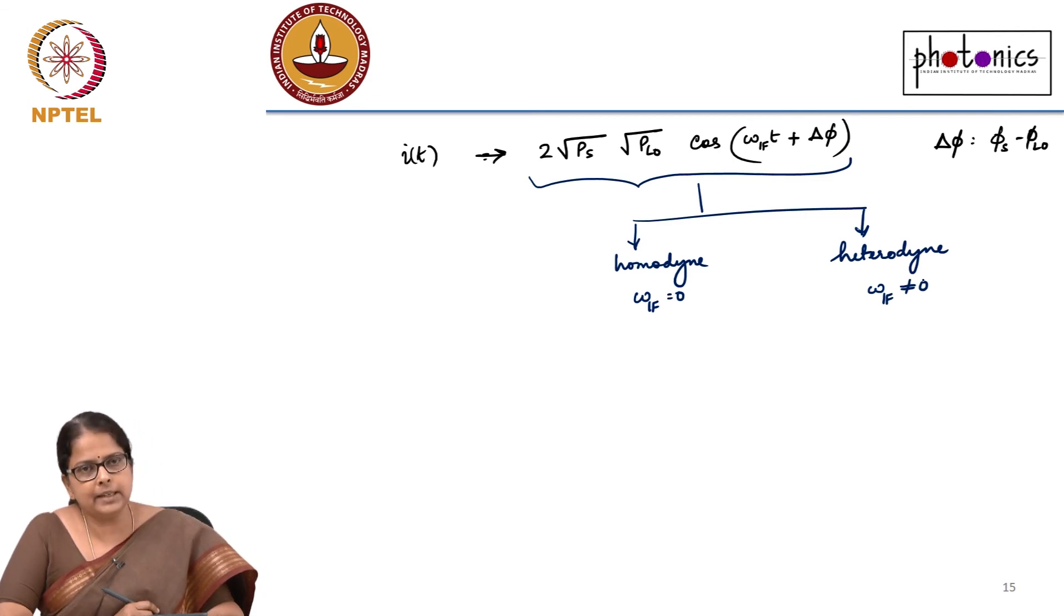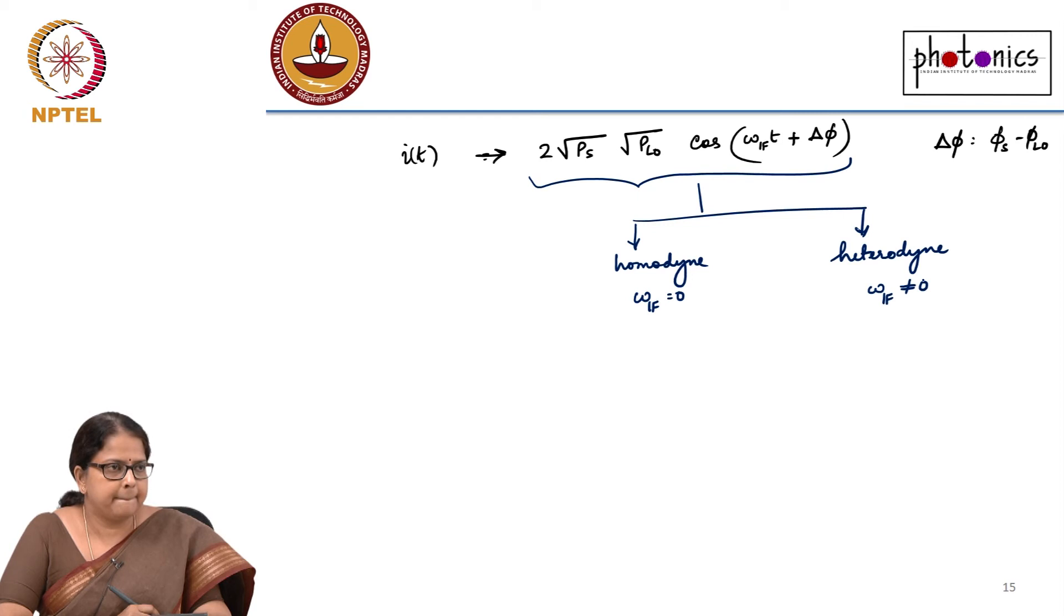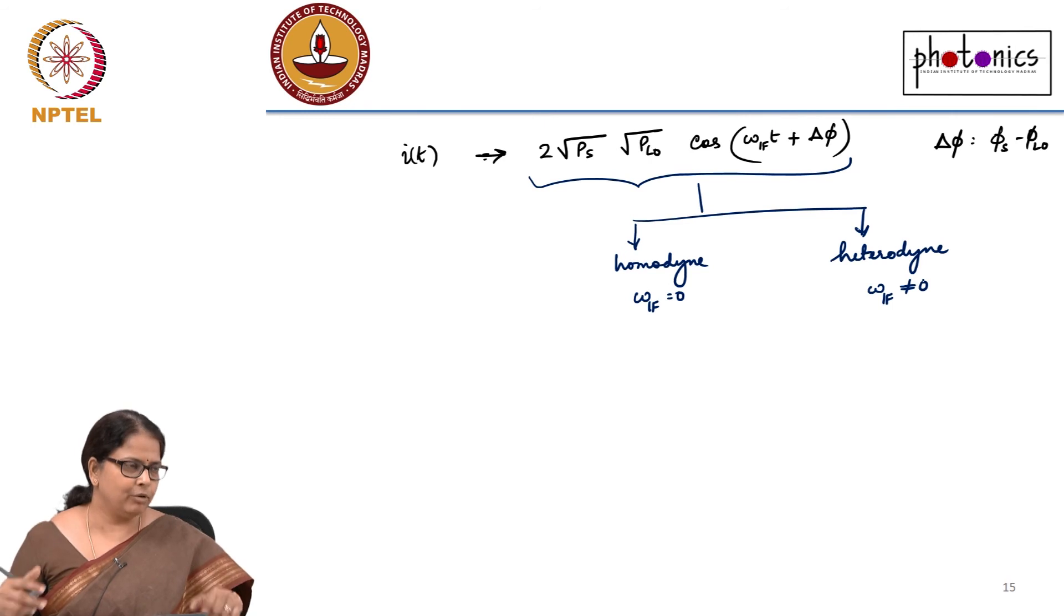Meaning my local oscillator is operating at a center frequency exactly identical to my signal frequency - that is homodyne detection. Now you can ask this question practically how do you do that? How do you make two lasers oscillate exactly at the same frequency? That is very hard. So typically in systems what we do is we do heterodyne detection. If you were to do homodyne detection, what would you do?